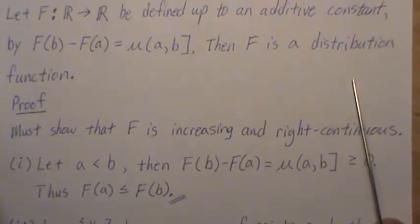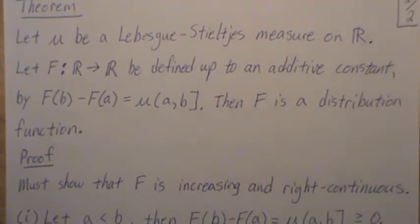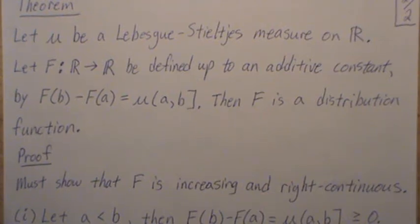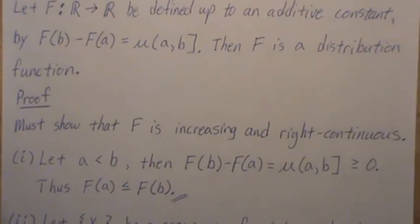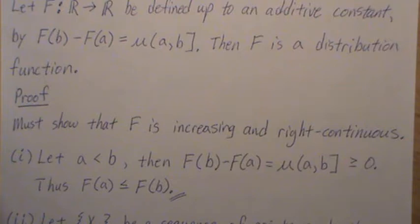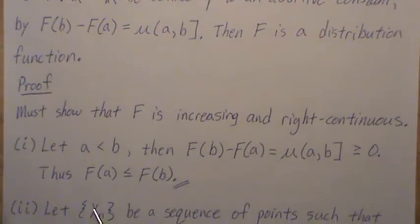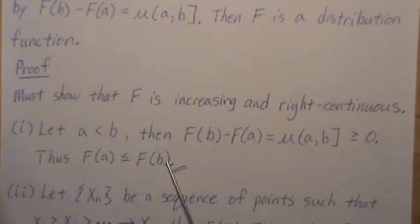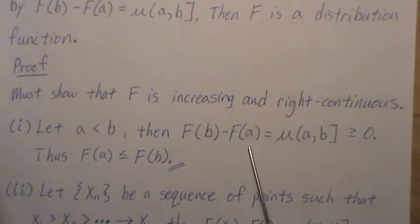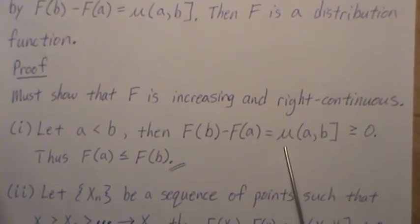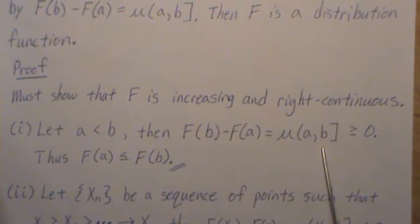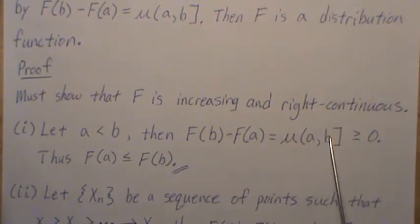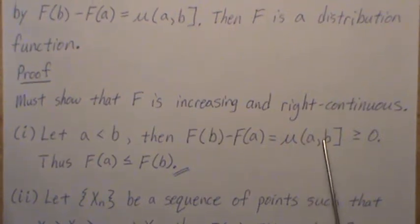The proof of this, that F is a distribution function when it follows this criteria, we must show that F is increasing and right continuous. Let a be less than b, then F(b) - F(a) equals μ(a,b].